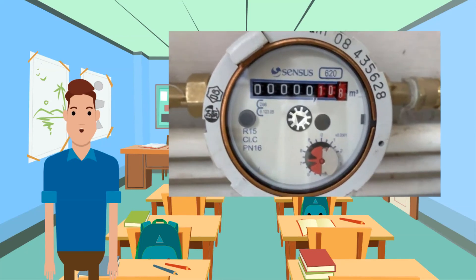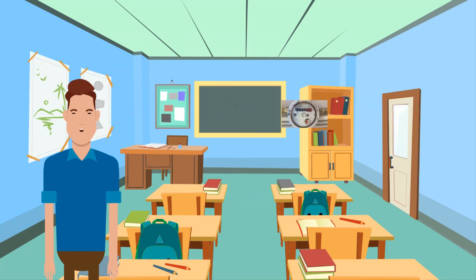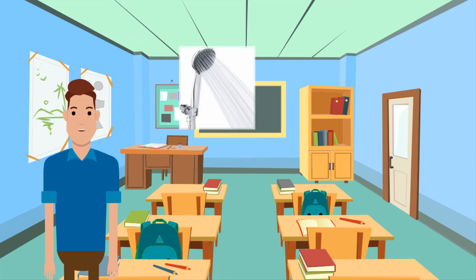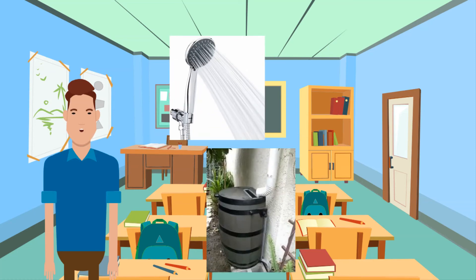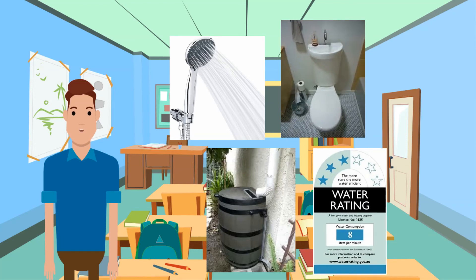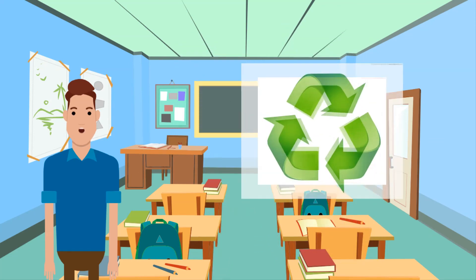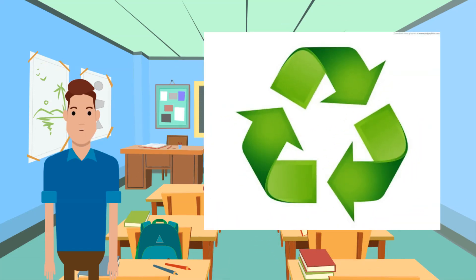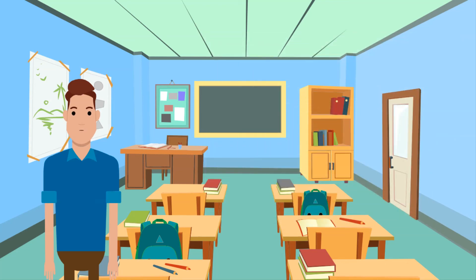The demand for domestic water can be monitored. Households with water meters in the UK use less water in general than those without. Households can also conserve water by having a shower instead of a bath, collecting rainwater to use in the garden rather than tap water, recycling bath water to flush the toilets, and installing more efficient appliances such as washing machines. Industries can also look to recycle wastewater — for example, water used for cooling and steelmaking can be recycled again and again. In agriculture, drip feed irrigation systems could be used rather than sprinkler systems.